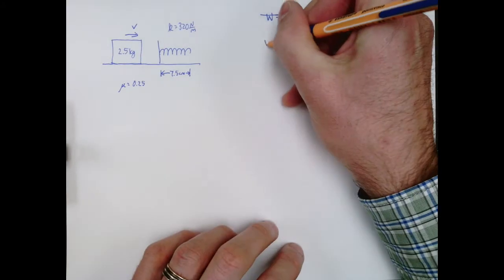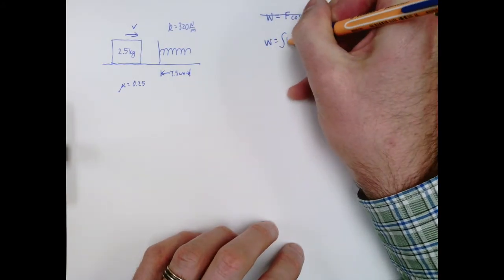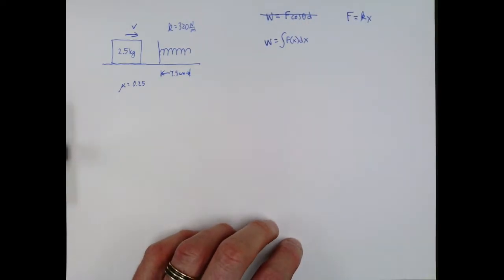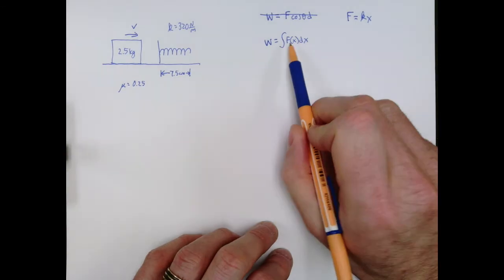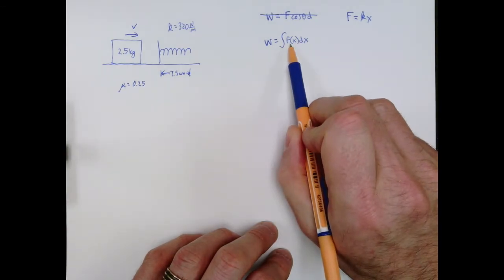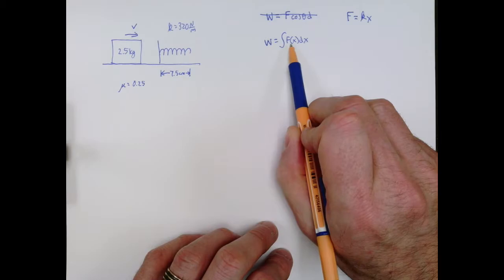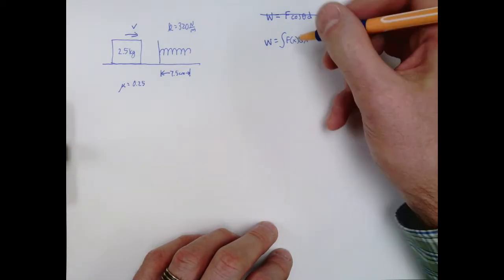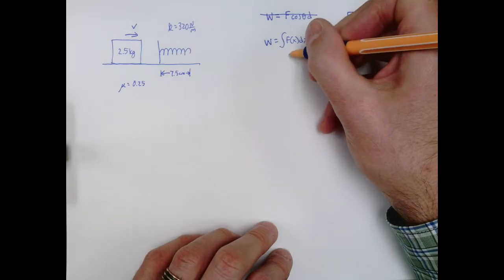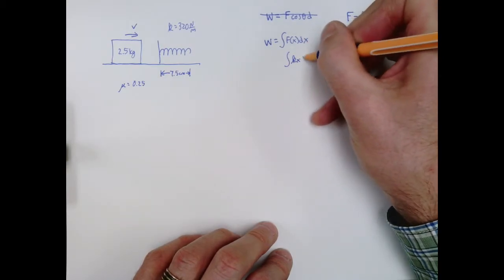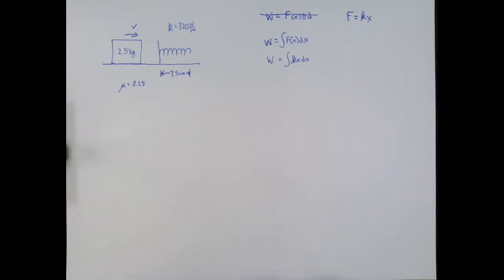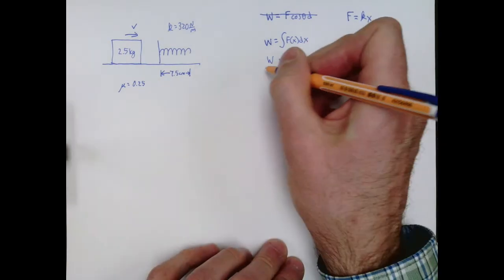Here's an option. Work is equal to the integral of f of x dx. That will work because as long as you have a formula for force that has x in it, and we do, you can perform that integration. So that's one way to do it. You could integrate kx dx. Now that's not the way that I'm going to do it. So if you want to choose to do it that way, you'll end up with the same answer I'm about to get.